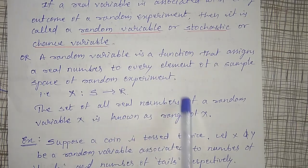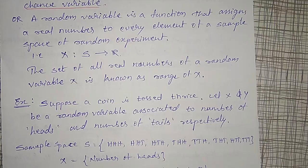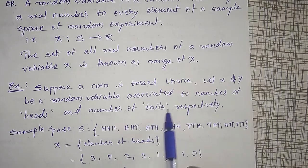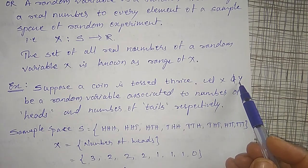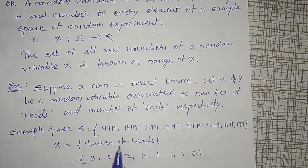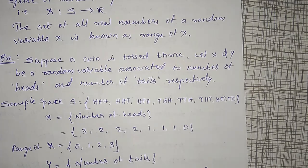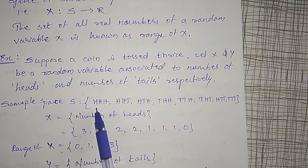With an example I would like to explain this random variable. Suppose a coin is tossed thrice. Let X and Y be random variables associated with the number of heads and number of tails respectively. X represents the number of heads and Y represents the number of tails. When you toss three coins there are totally eight possible outcomes — that set is known as the sample space.